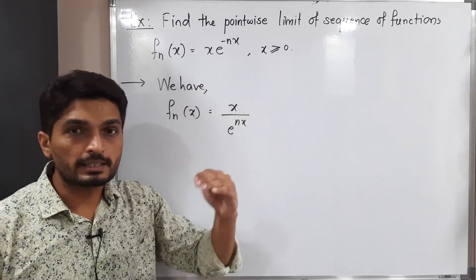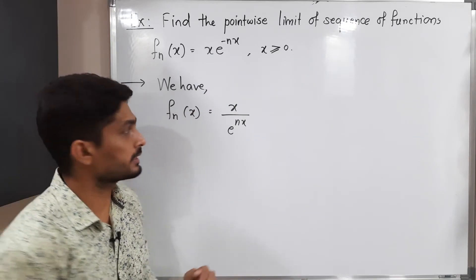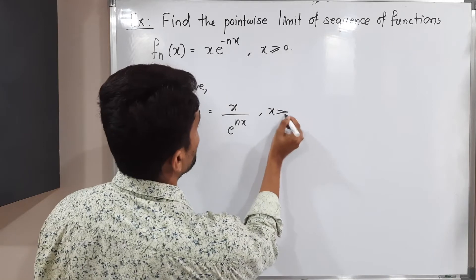Instead of writing e^(-nx), I have shifted it to the denominator, so it will be e^(nx), where x ≥ 0.